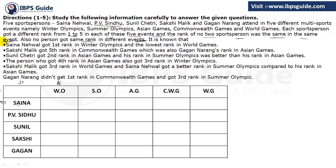Let's see the first piece of information: Sanya Nehwal got first rank in Winter Olympics. So we place 1 there. And she got the lowest rank — rank 5 — in World Games. So those are fixed positions in our grid.